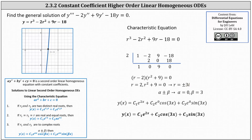Recall when the equation was second order and we had complex roots, the general solution was in the form y of x equals c sub one e to the power of alpha x cosine beta x plus c sub two times e to the power of alpha x times sine beta x. Which means our general solution, first using the root of two, we have y of x equals c sub one times e to the power of two x. Then using the two complex solutions where alpha is zero and beta is three, we have c sub two e to the zero cosine three x plus c sub three e to the zero sine three x. Simplifying, the general solution is y of x equals c sub one e to the two x plus c sub two cosine three x plus c sub three sine three x.